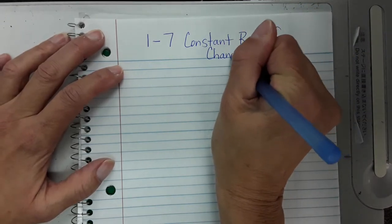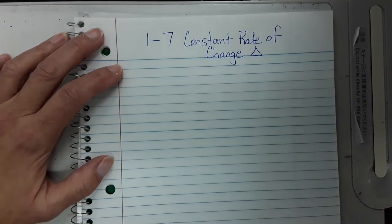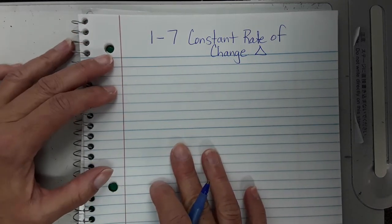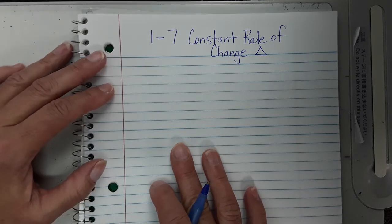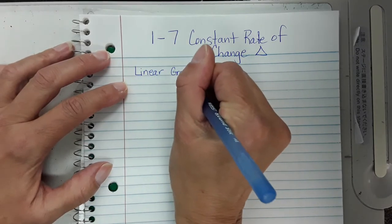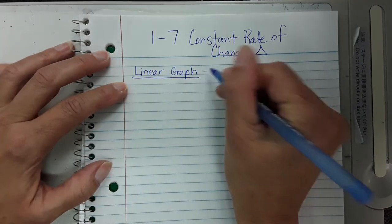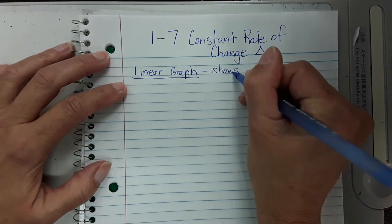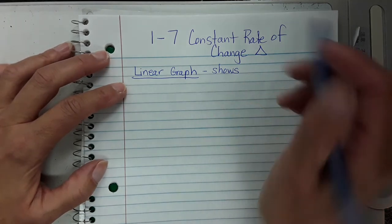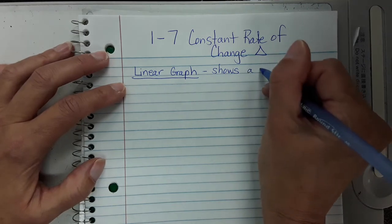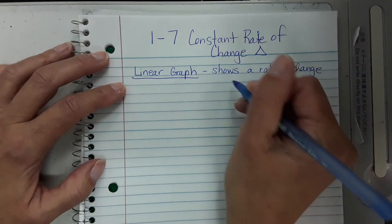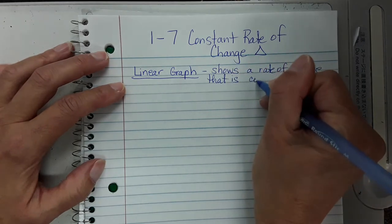When we talk about change, I'm going to use a triangle symbol. We've been talking about proportions — whether something is proportional or not. We know it's proportional if it's a straight line that goes through (0, 0). When the graph is a straight line, we call it a linear graph or a linear function, and that basically means it shows a constant rate of change.